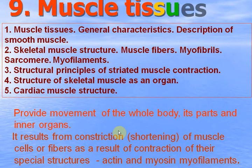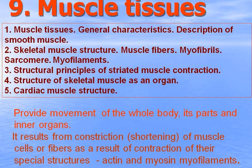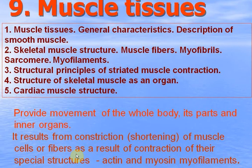Muscle tissues are specialized tissues which provide movement of the whole body, its parts and inner organs. It results from shortening of muscle cells or fibers as a result of contraction of their special structures, actin and myosin myofilaments or myofibrils.